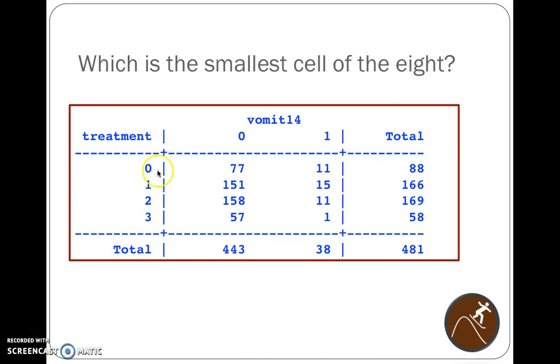So I'm asking you now, which is the smallest cell of the eight? We're not interested in these totals, and these are the names of the groups. We don't care about the totals. We have eight cells, one, two, three, four, five, six, seven, eight. So out of these eight cells, which one is the smallest? We see one.